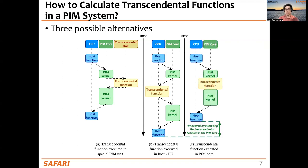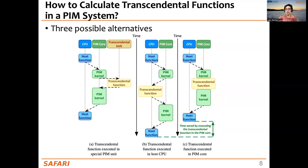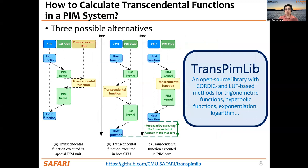The third alternative is to implement the transcendental functions in software in the PIM core. This way, we have the opportunity of saving time by avoiding data movement between the PIM core and the CPU back and forth. This third alternative is TransPIM-Lib: an open-source library with CORDIC and LUT-based methods for trigonometric functions, hyperbolic functions, exponentiation, logarithm, square root, etc.